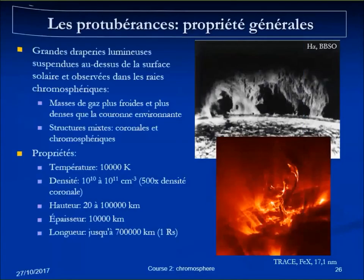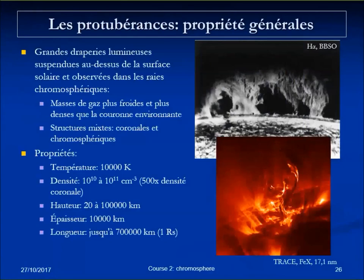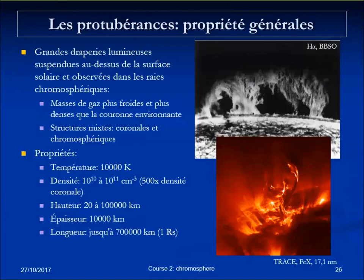Prominences are large bright curtains suspended high above the surface, up to 20,000 to 100,000 kilometers above. They correspond to cool and dense gas at about chromospheric conditions, but suspended high above the chromosphere in the corona. Temperatures and densities correspond to the top of the chromosphere. Their thickness is generally much smaller than their vertical extent — often blade-like — and the full extent can be up to one solar radius, much more than the Earth-Moon distance.